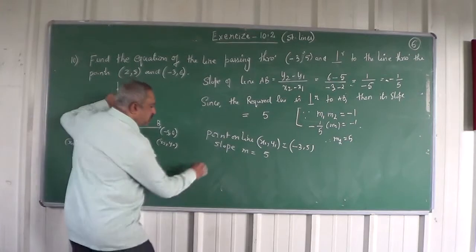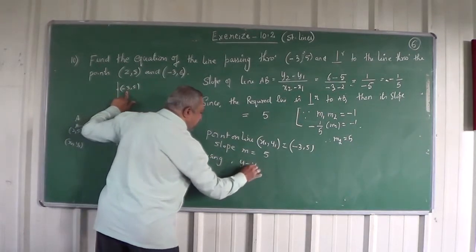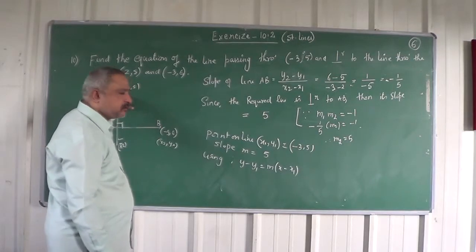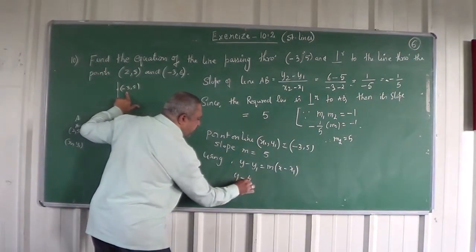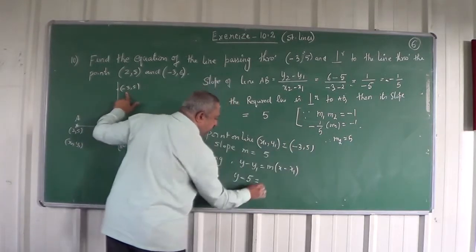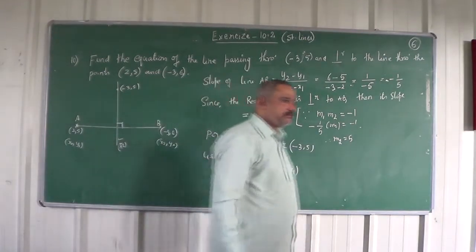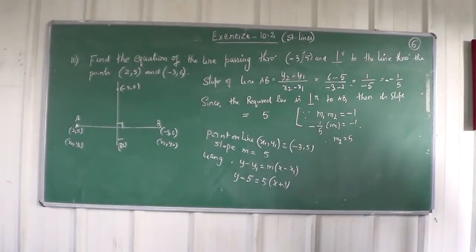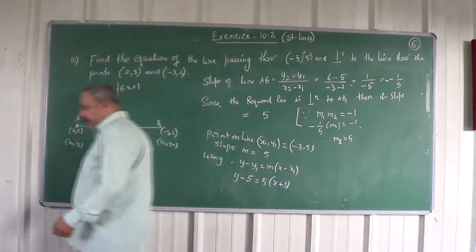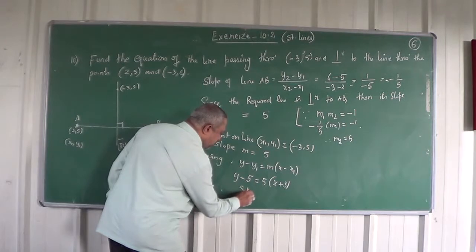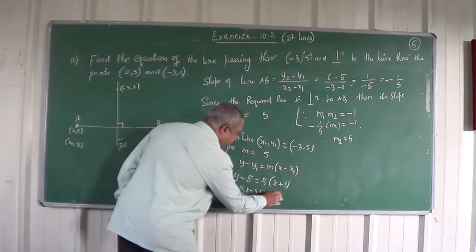So what formula will you use now? Using y minus y1 equals m times x minus x1. Here y1 is 5, m is 5, and x1 is minus 3, so y minus 5 equals 5 times x minus of minus 3. Simplifying, we get 5x minus y plus 20 equals 0. So the required equation is 5x minus y plus 20 equals 0.